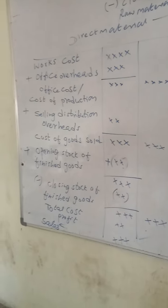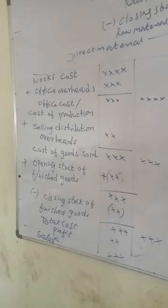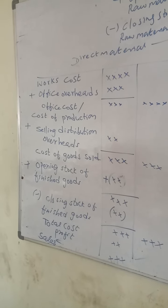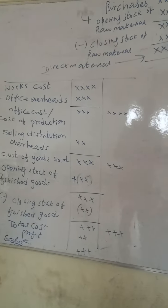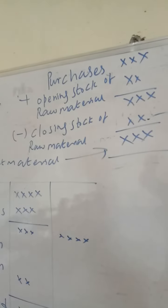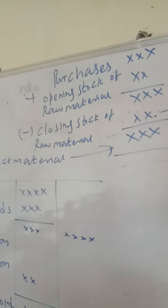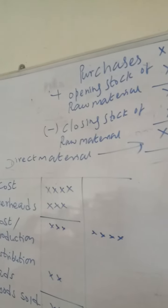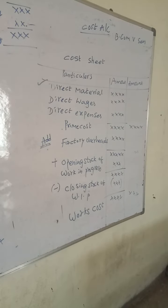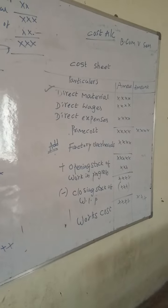The stock falls into three categories: raw materials, work in progress, and finished goods. Raw materials become direct materials, also known as direct materials and materials consumed. Cost accounts relate to total cost or factory operations.